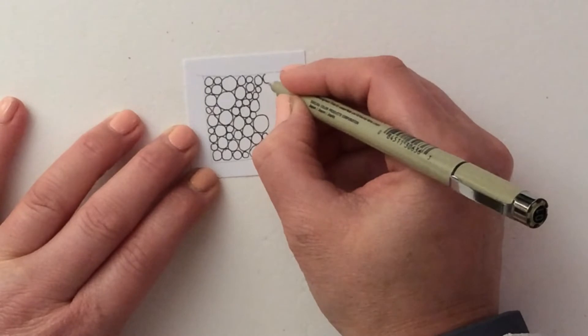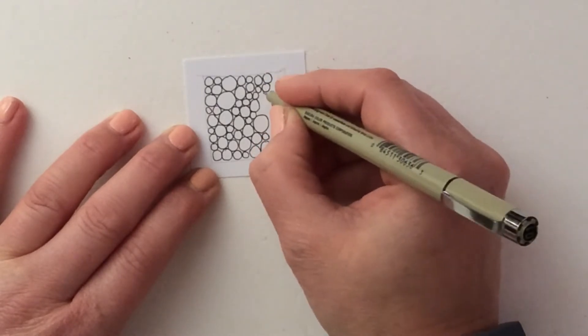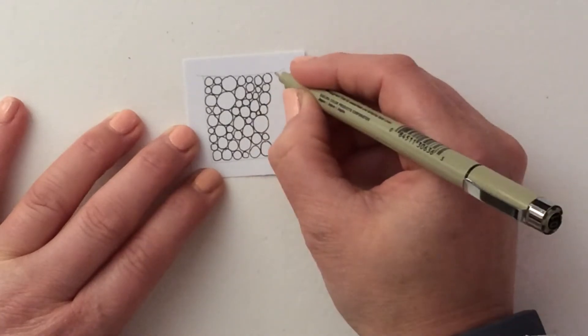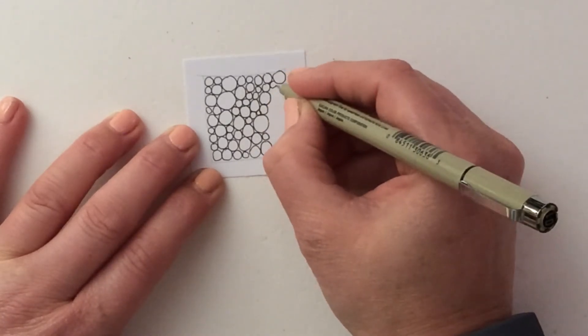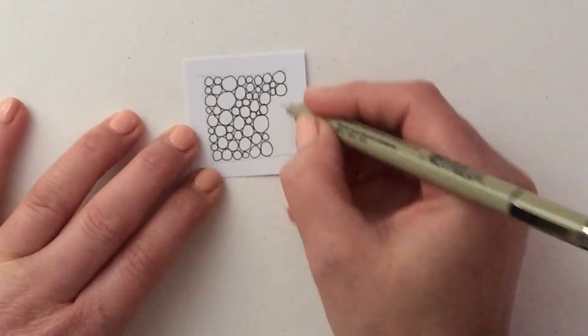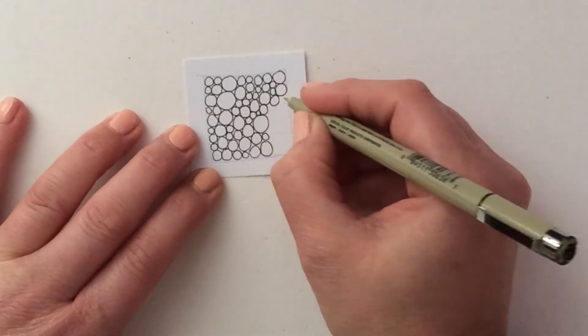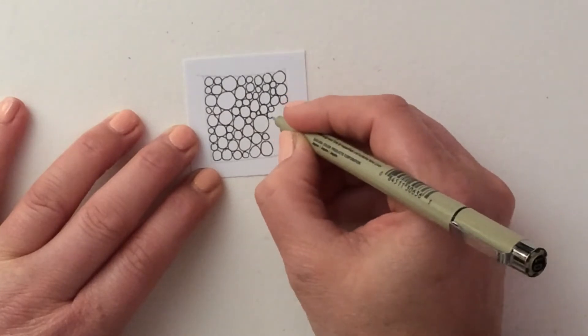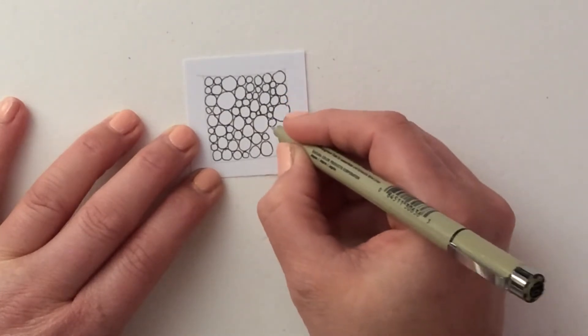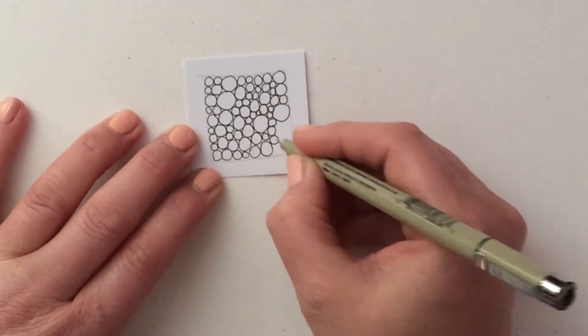And as you can see, I'm just continuing to add circles, making sure that they all are still touching without overlapping and they differ in size.